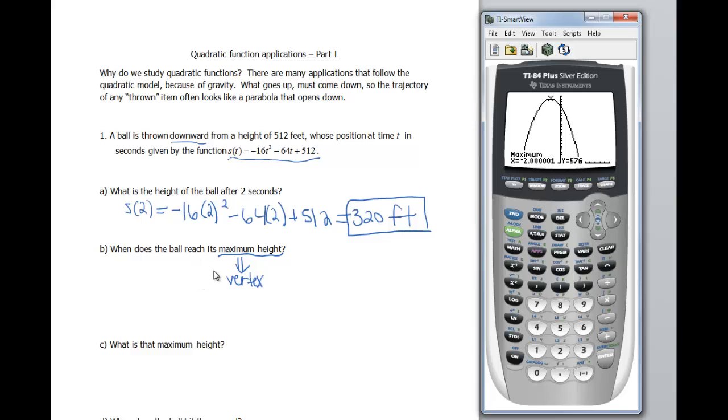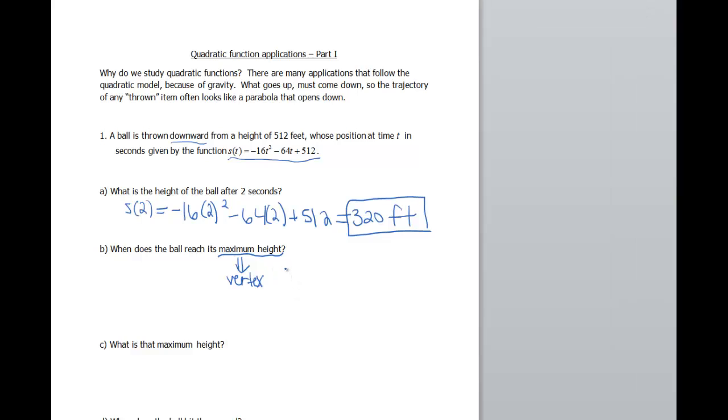And you notice my maximum's at negative 2, 576. So this would be 2 seconds before it was thrown. Which again, doesn't exactly make a whole lot of sense. But remember, we were throwing this object down. So that's why that would be the case. So when does the ball reach its maximum? So let's write down our vertex is at negative 2, 576. So this would be 2 seconds before it's thrown. Which again, doesn't make any sense. But that's okay. We wanna practice this stuff.